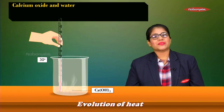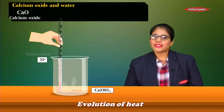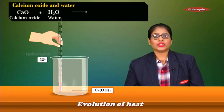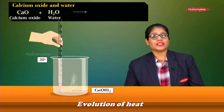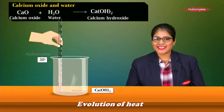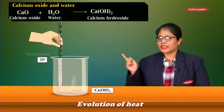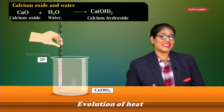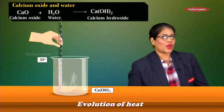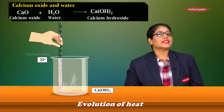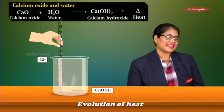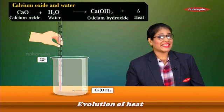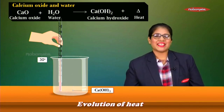The reaction taking place here is: calcium oxide (CaO) reacting with water (H₂O) to give us calcium hydroxide Ca(OH)₂. Since this reaction is exothermic, we put a +Δ to indicate that heat is evolved. So the complete equation is: CaO + H₂O → Ca(OH)₂ + Δ.